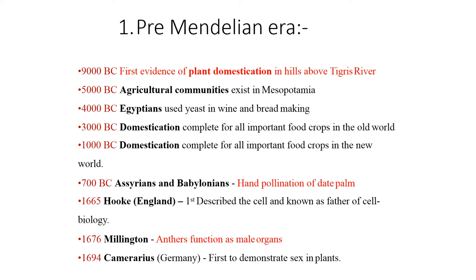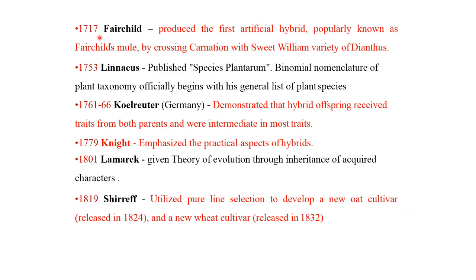In 1676, the anther function as a male organ was discovered. In 1717, Fairchild produced the first artificial hybrid, popularly known as Fairchild's mule, by crossing carnation with sweet William, a variety of Dianthus. In 1761 to 1766, a German scientist demonstrated that hybrid offspring received traits from both parents and were intermediate in most traits.